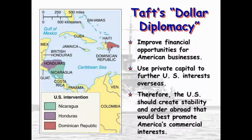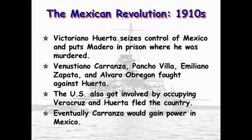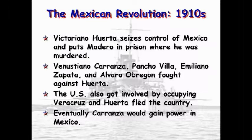We're an imperialist power overseas, but what about closer to home? The United States was always having trouble with Mexico in the 19th century. We had the war for Texas independence in 1836, and then the Mexican War from 1846 to 1848, where we had to wrestle Mexico away from our shores. At the turn of the 20th century, there was a Mexican revolution. Victoriano Huerta seized control of Mexico and put Madero in prison, where he was murdered. Venustiano Carranza, Pancho Villa, Emiliano Zapata, and Alvaro Obregón fought against Huerta.